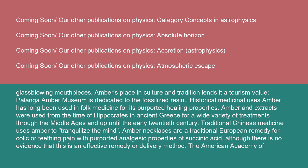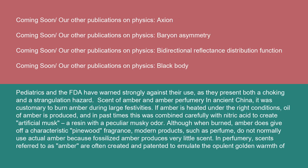Historical medicinal uses: Amber has long been used in folk medicine for its purported healing properties. Amber and extracts were used from the time of Hippocrates in ancient Greece for a wide variety of treatments through the Middle Ages and up until the early 20th century. Traditional Chinese medicine uses amber to tranquilize the mind. Amber necklaces are a traditional European remedy for colic or teething pain, with purported analgesic properties of succinic acid, although there is no evidence that this is an effective remedy or delivery method. The American Academy of Pediatrics and the FDA have warned strongly against their use, as they present both a choking and a strangulation hazard.